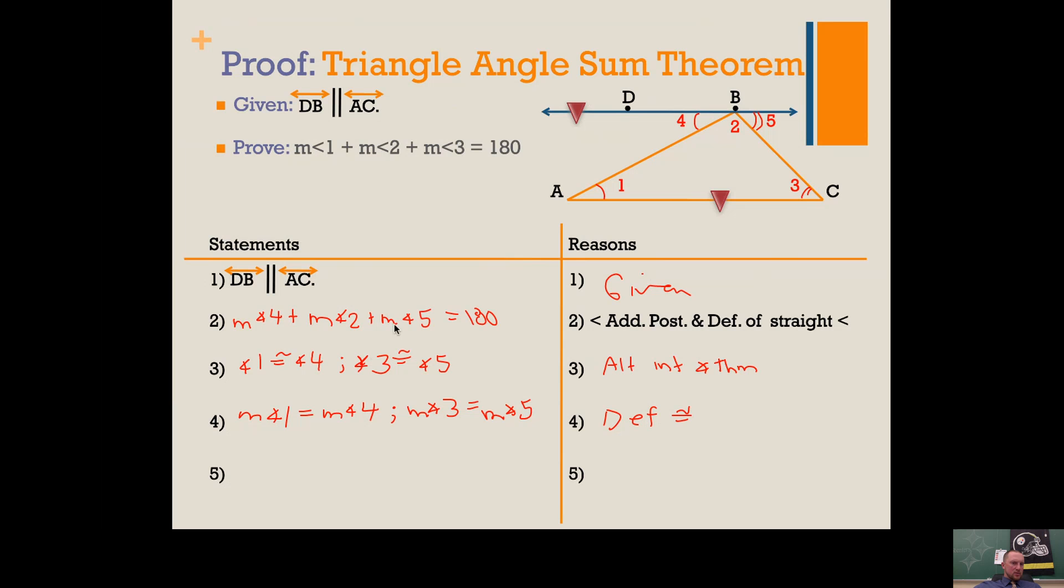Now if we go back to step two, notice we have angle 4 here and I know angle 4 is the same as angle 1, so I'm going to take angle 4 out and put angle 1's measure in. I still have the measure of angle 2, then I add the measure of angle 5, which is the same as angle 3. Notice angles 1, 2, and 3 are the interior angles of a triangle - they add up to 180. I substituted to get that.